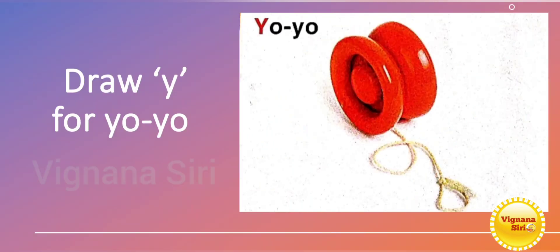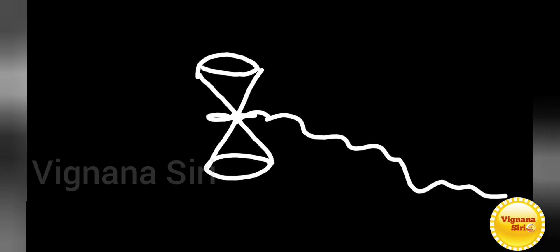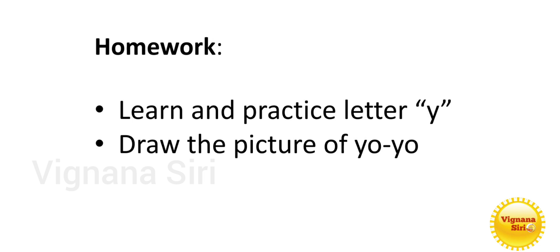Draw it. Let's go. So, small letter Y in the inch — first, small letter Y is set. Okay? YAWN is a string. That's why it is very simple. Practice easy — practice the shape. Now kids, learn and practice small letter Y, draw the picture of yo-yo and learn the new words. Okay, now kids, bye bye, have a nice day!